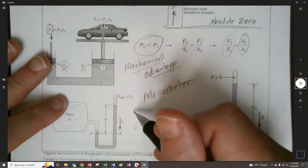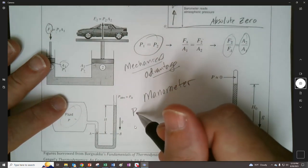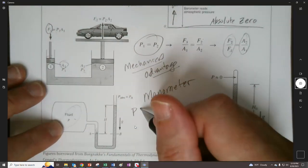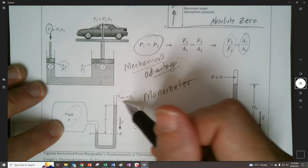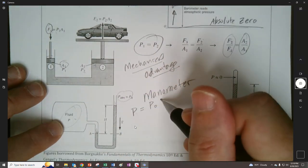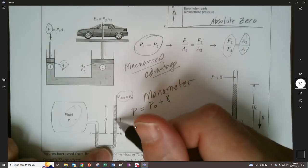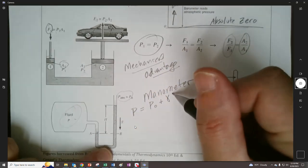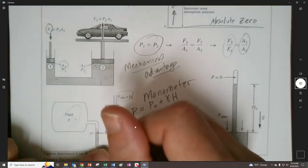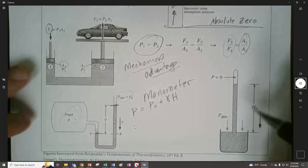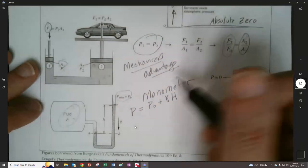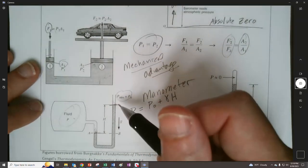So like if we needed to find this pressure we could have the general equation that the pressure at p right here is going to be equal to this pressure plus the specific weight of what's inside here times the h, the difference right here, the difference between this surface and this surface.